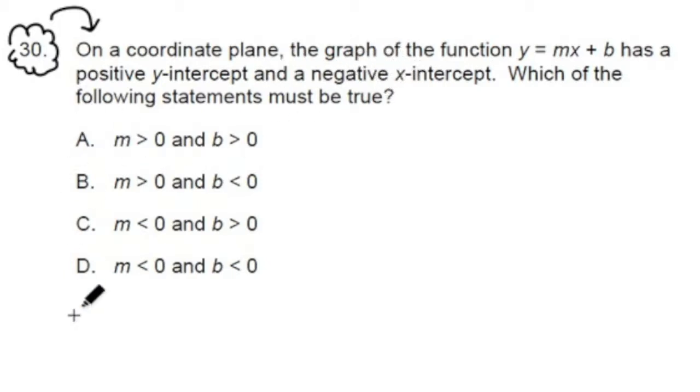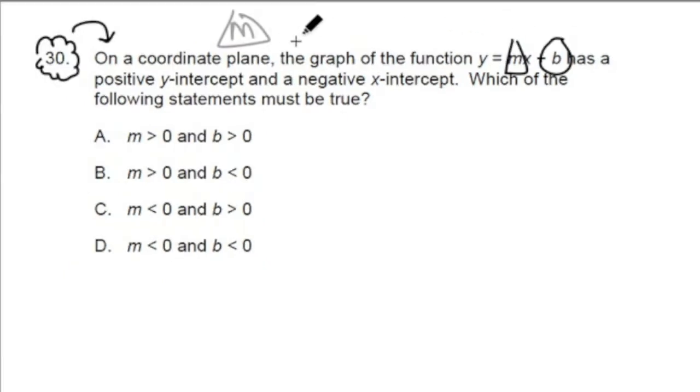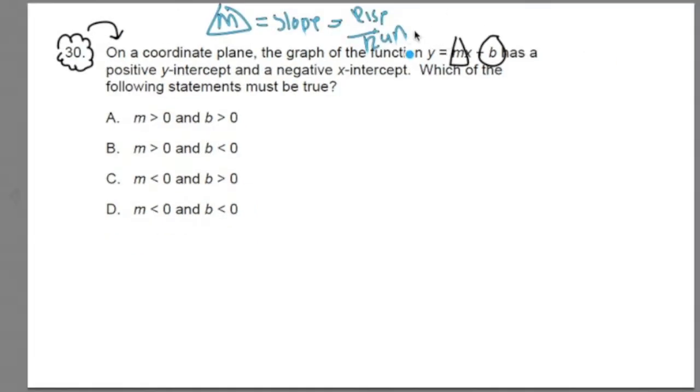Now this m in our linear function here, this is actually called slope y-intercept form. This m right here represents the slope of this graph. And this b right here represents the y-intercept when x is zero. So this m is the slope, we thought of that before in other videos as rise over run, and b is the y-intercept.